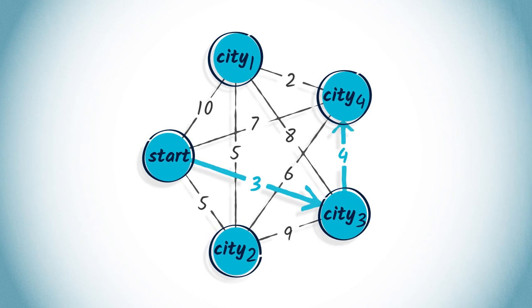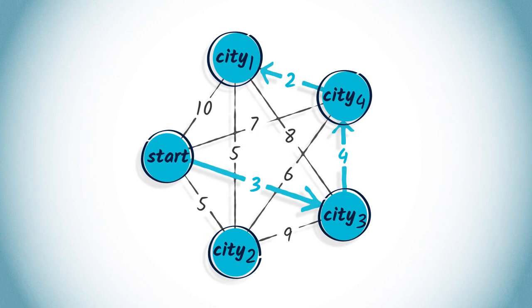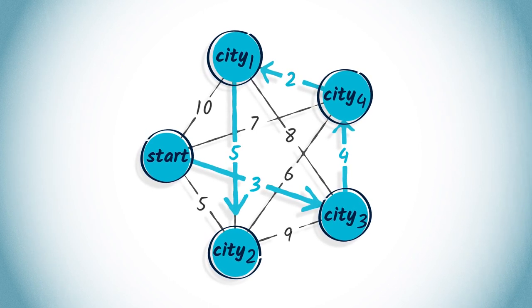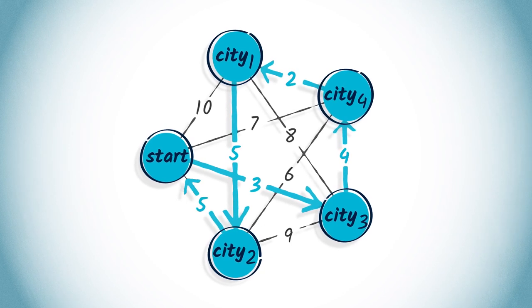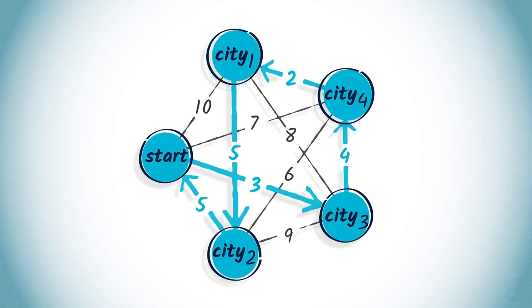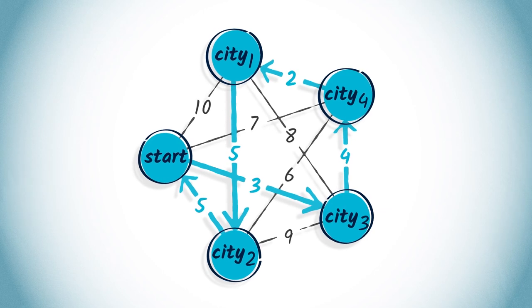This is a greedy algorithm because at each point, the distance to travel is minimized one step at a time. So we've made locally optimal decisions. However, this solution is not necessarily optimal.